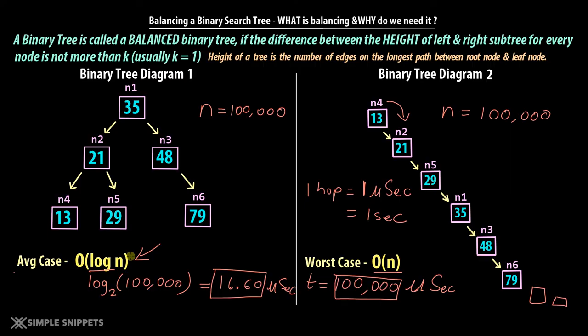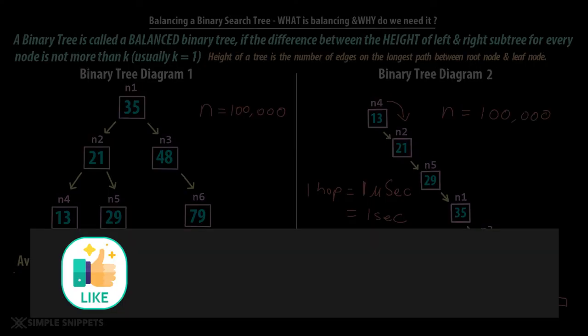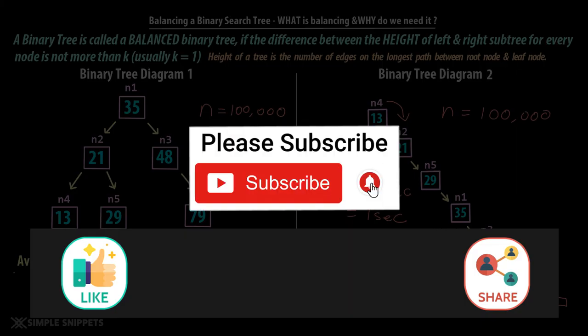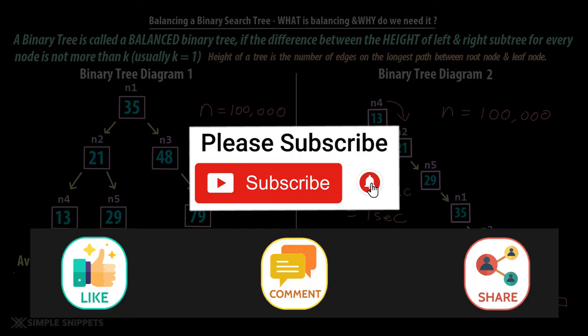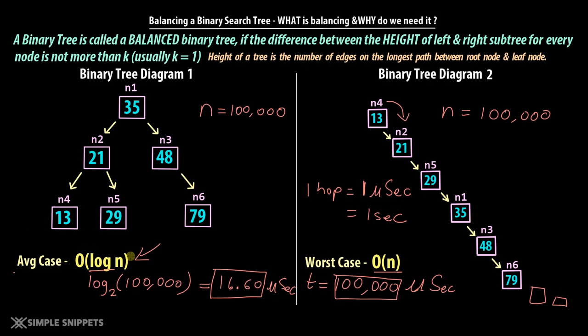I'm going to wrap up this video here. I hope you've understood what is balancing and why we need it - the biggest reason is efficiency and time optimization. An unbalanced tree always performs worst in time while a balanced tree is the most optimized. Please give it a like, share it with your friends, and subscribe and turn on notifications for future videos covering different balancing types in detail. Thanks for watching, see you in the next one!